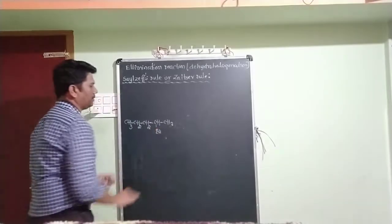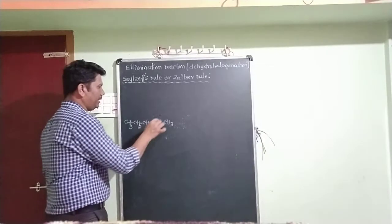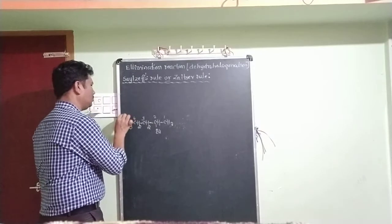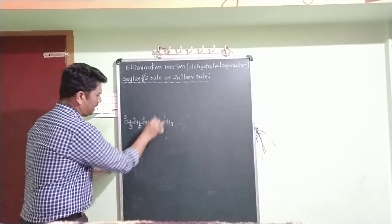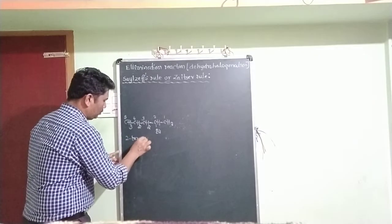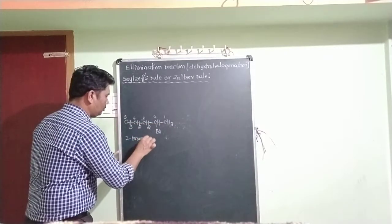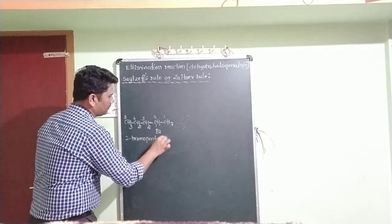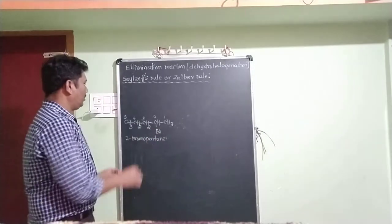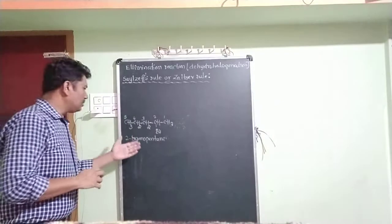This haloalkene has Br at the second position. Numbering the chain: one, two, three, four, five — five carbon atoms are there. So the name of this haloalkane is 2-bromopentane. This is the alkyl halide we are using.